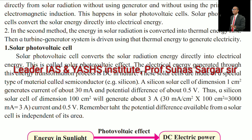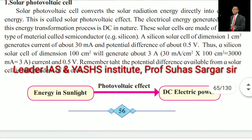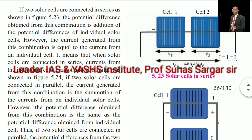A silicon solar cell of dimension 1 cm² generates a current of about 30 mA and a potential difference of about 0.5 V. Thus, a silicon solar cell of dimension 100 cm² generates a current of about 3 A and 0.5 V. Remember: the potential difference available from a solar cell is independent of the area. If two solar cells are connected in series, the potential difference obtained from the combination is the sum of the potential differences of the individual solar cells. However, the current generated from this combination is equal to the current from an individual cell — when solar cells are connected in series, the currents from individual cells are not added.